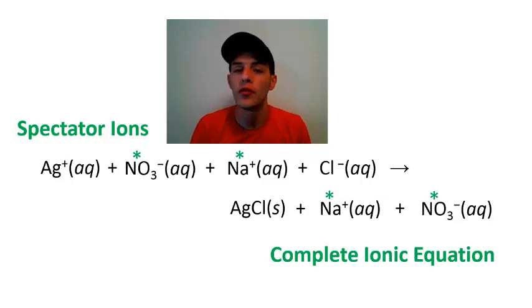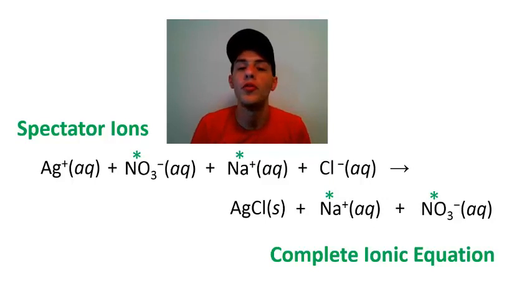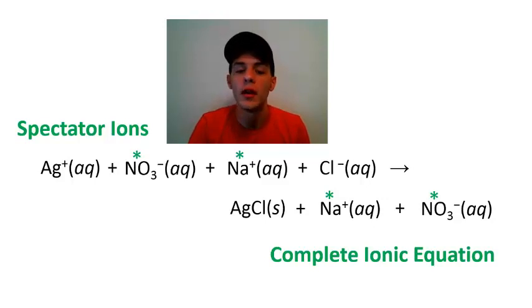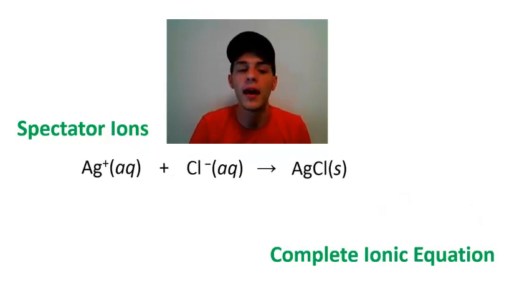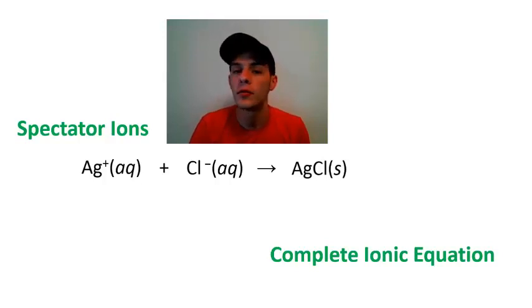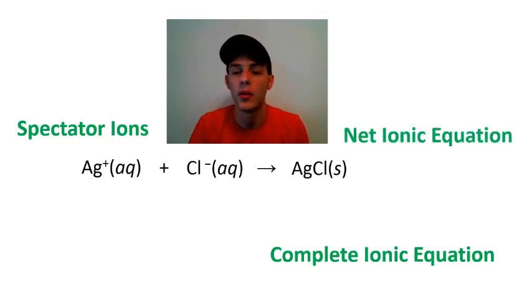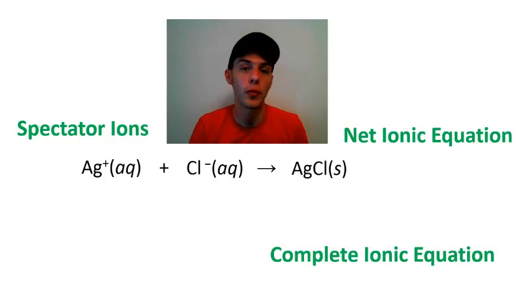Just like a mathematical equation, anything that appears on both sides can be removed — you can cancel those spectator ions out to simplify the equation. We're going to simplify our complete ionic equation by removing those spectator ions. The resulting equation is: silver ion Ag+(aq) plus chloride ion Cl-(aq) yields solid silver chloride AgCl(s). This is called a net ionic equation — the equation that results once all spectator ions have been removed from the complete ionic equation.